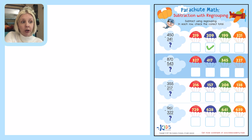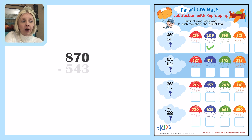Now I'm going to go to the next one. The next one is 870 minus 543.